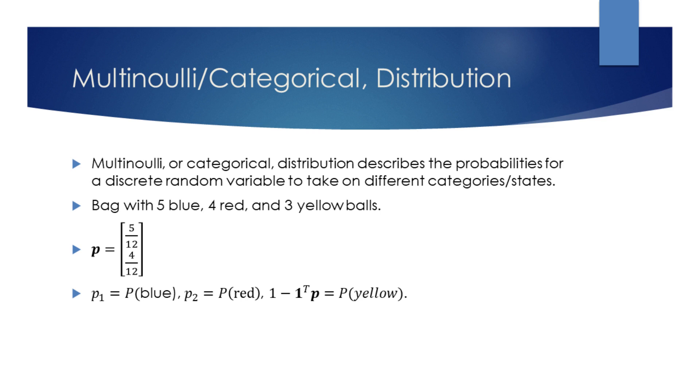Let's now parametrize this categorical distribution using a vector p. We will have the first element of this vector describe the probability of the outcome to be blue. Since we have a total of 12 balls, out of which 5 are blue, the first element will be equal to 5 twelfths.